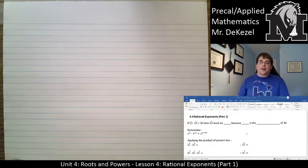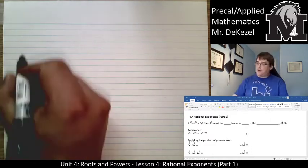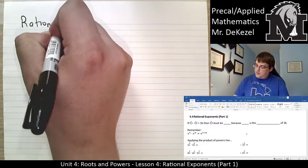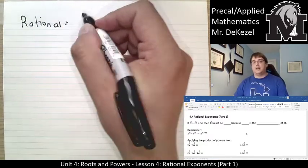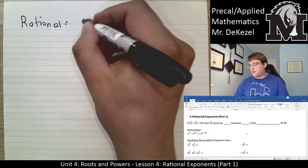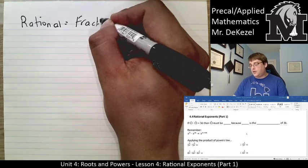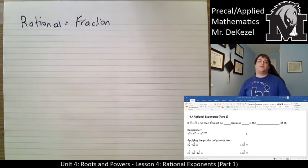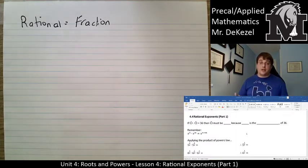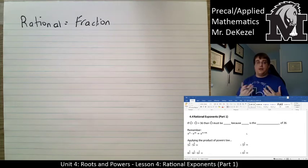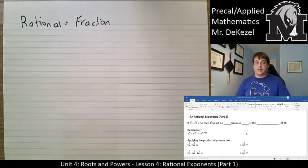Essentially, what we're talking about when we say rational exponents is that they are going to be fractions. So the exponents are going to be fractions, or they might be a decimal that you need to turn into a fraction. But it's not just going to be a whole number — it's going to be something a little bit different.